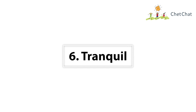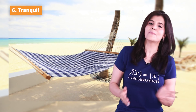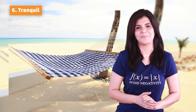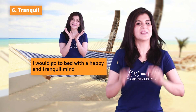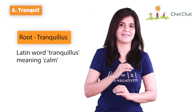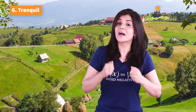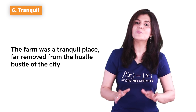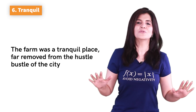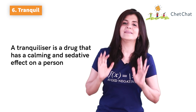Word number six is 'tranquil.' Tranquil means free from disturbance — very calm. An example of a tranquil atmosphere is a hammock on the side of the ocean on a quiet day. The word tranquil comes from the Latin word 'tranquillus,' which means calm. Tranquil is usually used for peaceful and calm places; if you want to describe a calm person, 'serene' would be more appropriate. Example: 'The farm was a tranquil place, far removed from the hustle and bustle of the city.'